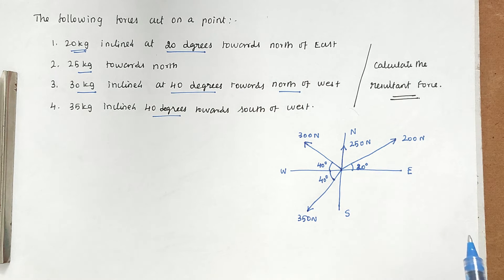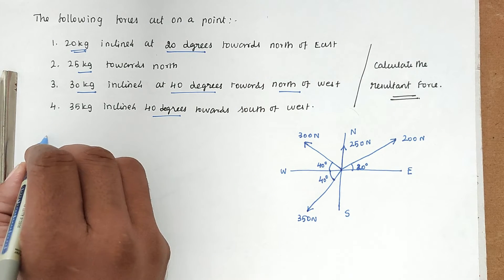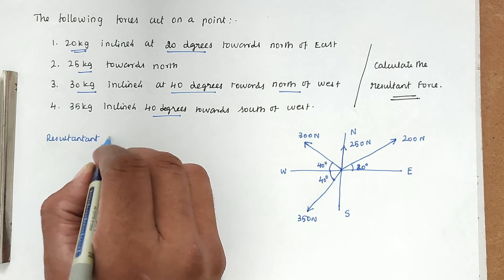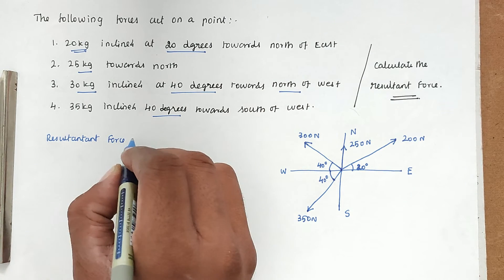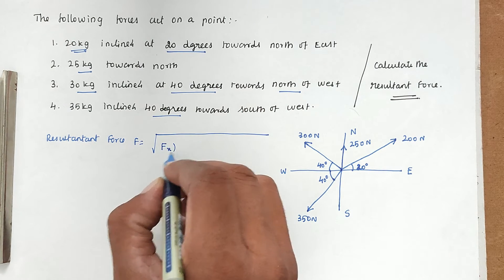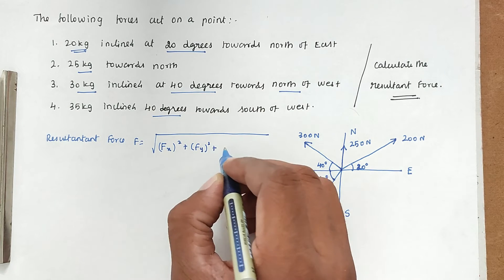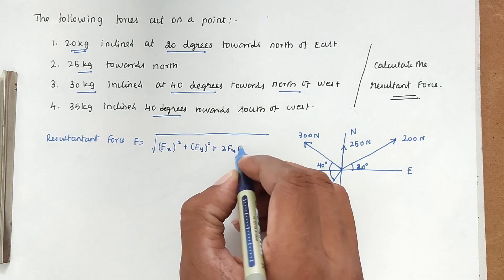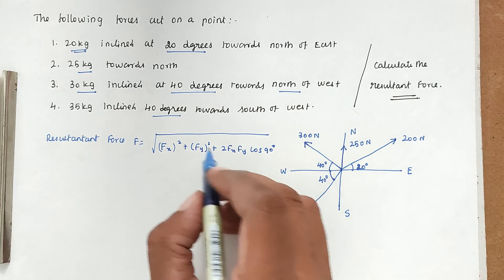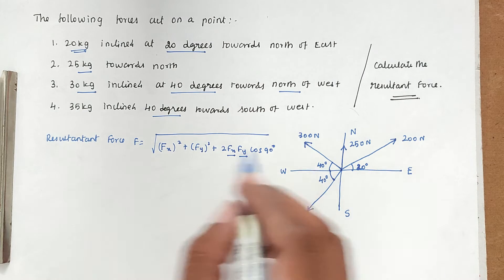To find the resultant force, we use the formula: F = √(Fx² + Fy² + 2·Fx·Fy·cos 90°). Here Fx represents the sum of horizontal force components and Fy represents the sum of vertical force components.